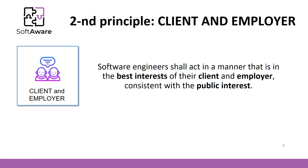The second principle is called client and employer, and it tells that software engineers should do what is best for the employee and the client by considering the public interest. Of course, these two sides often conflict with each other — one side wants to make the product cheaper, the other side wants good quality, and your responsibility is to find an agreement. Keep private any confidential information gained in your professional work. Engineers should also tell the truth even if the project is going to fail.